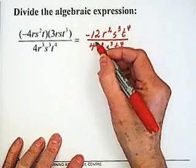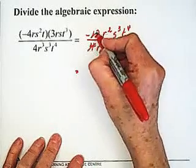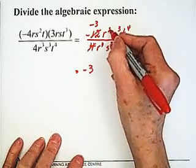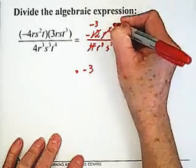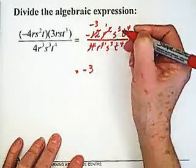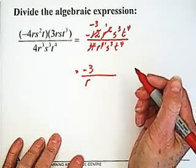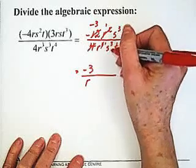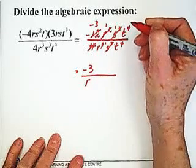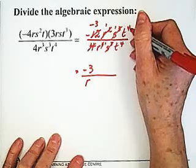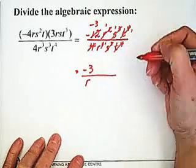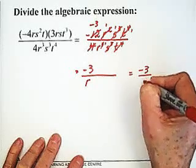We divide top and bottom by 4 — this one's gone, this one's gone, leaving us with minus 3. We can see we have r squared in the numerator and r cubed in the denominator. We divide top and bottom by r squared: this one leaves us with 1, and the denominator loses 2 r's leaving 1 r. So we end up with r in the denominator. Here we have s cubed divided by s cubed — they're the same, so we're left with 1. And t to the fourth divided by t to the fourth — the same, so we get rid of them. Our answer is minus 3 over r.